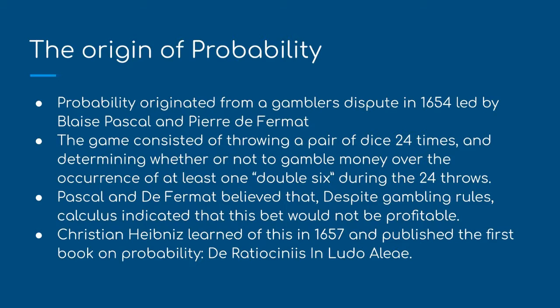Pascal and de Fermat believed that despite gambling rules, mathematics indicated that this bet would not be profitable. Christiaan Huygens learned of this in 1657 and published the first book on probability, called De Ratiociniis in Ludo Aleae.